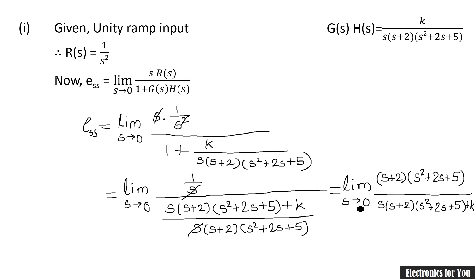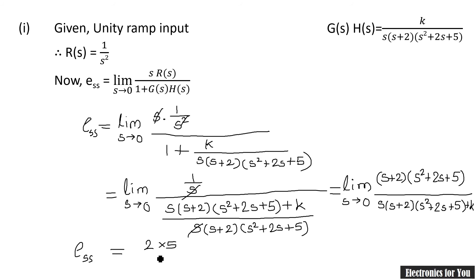Simplifying further, the s terms cancel and we apply the limit s tends to 0. Putting s equal to 0 in all terms, in the numerator we get 2 multiplied by 5, which is 10. All s terms go to 0, leaving 0 plus K in the denominator. Therefore E_ss equals 10/K.